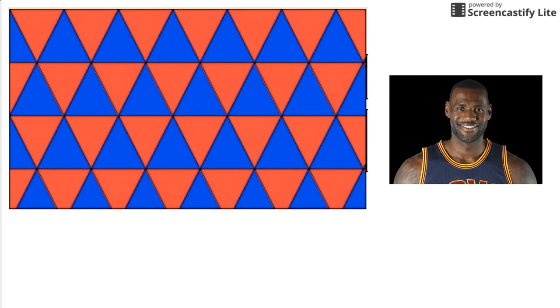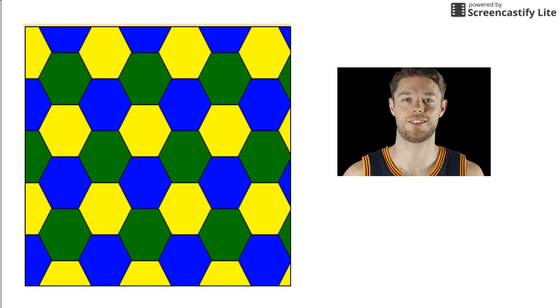Let's see who contestant number two is on Does It Tessellate. Hey, look at this. From Australia, all the way from Australia, Matthew Dellavedova. All right, Matt. Or can I call you Deli? All right, Deli. Does this shape tessellate?